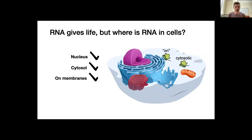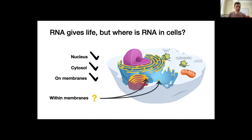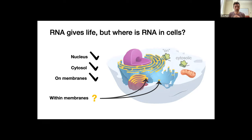RNA also actually exists on membranes — there's membrane translation at the plasma membrane and at the ER membrane. But what I came to realize as I was thinking through my postdoc and working in a glycobiology lab was that there's pretty little information about RNA being in membranes, in the luminal spaces of organelles like the ER or Golgi. We're going to separate out the mitochondria for the moment.